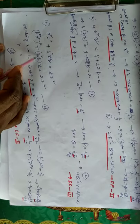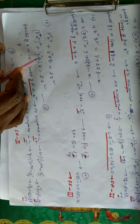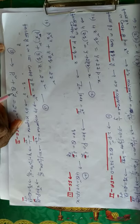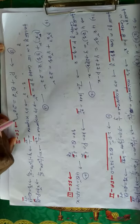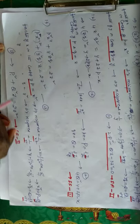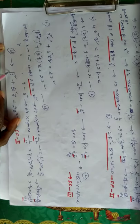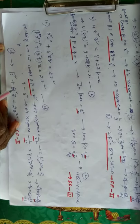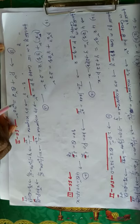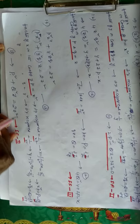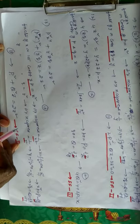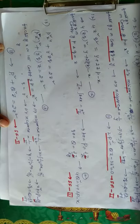By substituting x²p = capital P and y²q = capital Q, we get P² + Qz = Z². This is a partial differential equation containing P, Q, and z, but not X and Y. Hence it belongs to standard form 2.